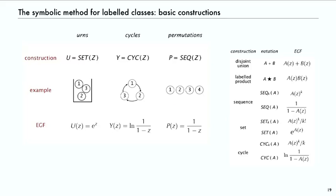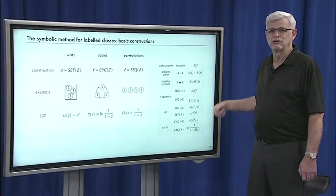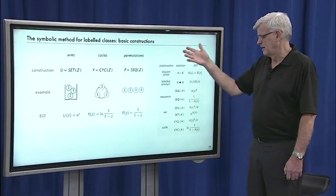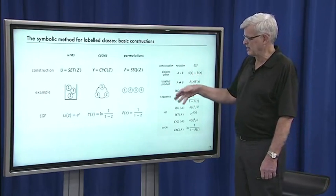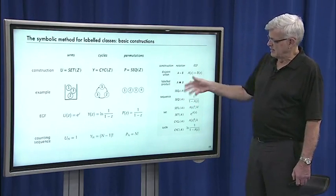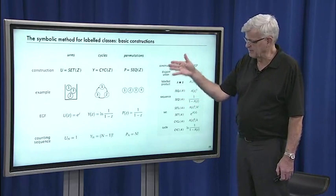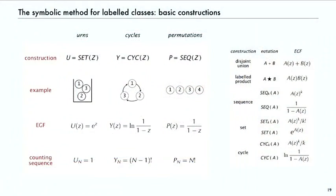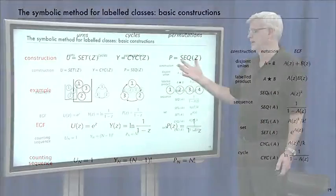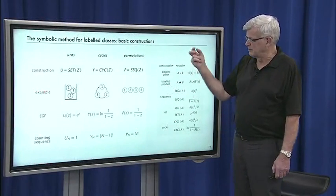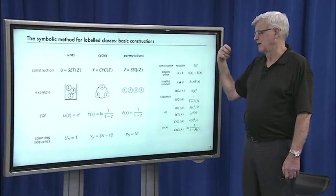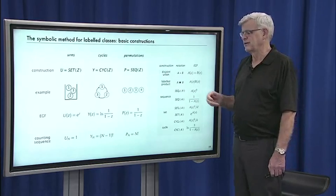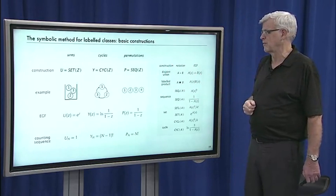It's a set of objects — a single object's GF is z, and the theorem says you take e to that power for sets. For cycles, it's log of one over one minus z, directly from the transfer theorem — we don't have to reason about counting them. For permutations, it's one over one minus z, again directly from the transfer theorem. We can then extract coefficients from those generating functions to get the counting sequences. That's the same method we're going to use for any combinatorial class: specify the construction, use the transfer theorem to get a generating function, and extract information about the coefficients.